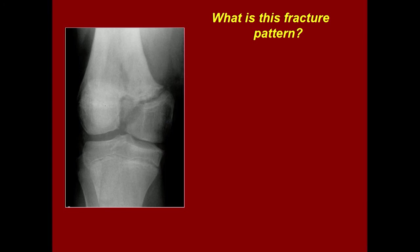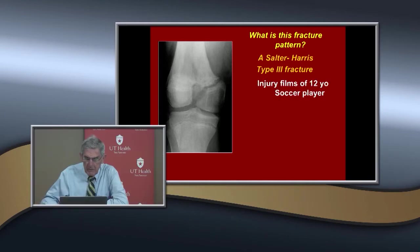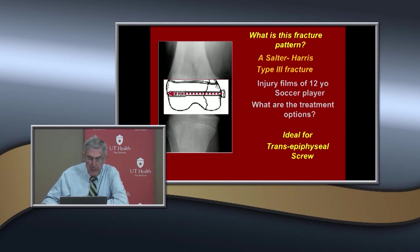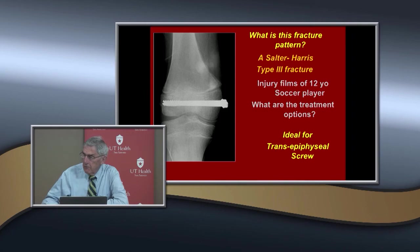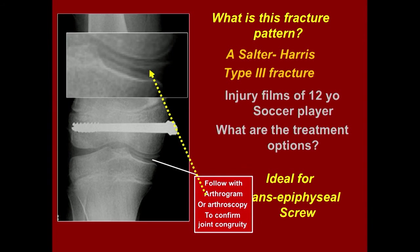What about a Salter-Harris III fracture — the type of intra-articular fracture? That needs trans-epiphyseal screws. This was a 12-year-old soccer player, and the treatment option is trans-epiphyseal screws — ideally partially threaded screws for compression. You usually need two for stability. I like to follow with an arthrogram to confirm articular congruity; some surgeons use arthroscopic examination.